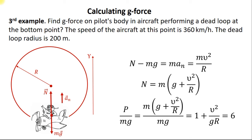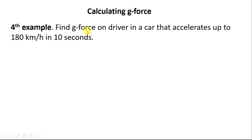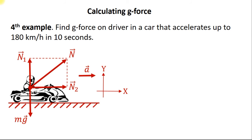And the last example, number 4: Find g-force on a driver in a car that accelerates up to 180 km per hour in 10 seconds. In this case, the normal force consists of two components. The vertical component N1, its magnitude is equal to the magnitude of the weight force, and the horizontal component N2.